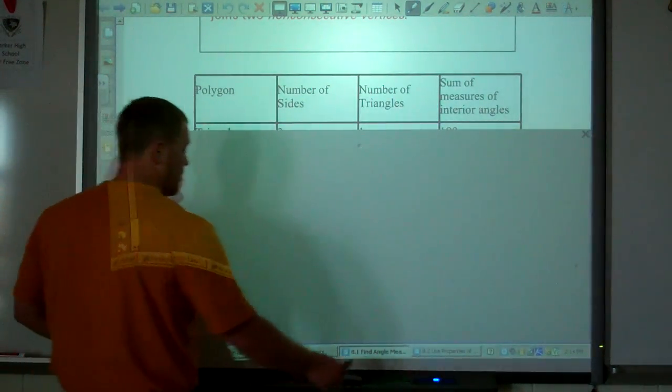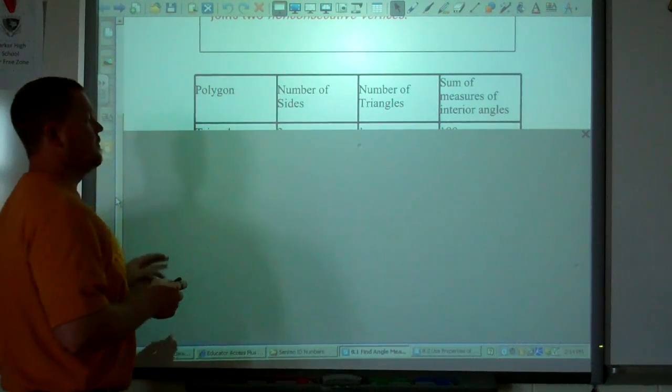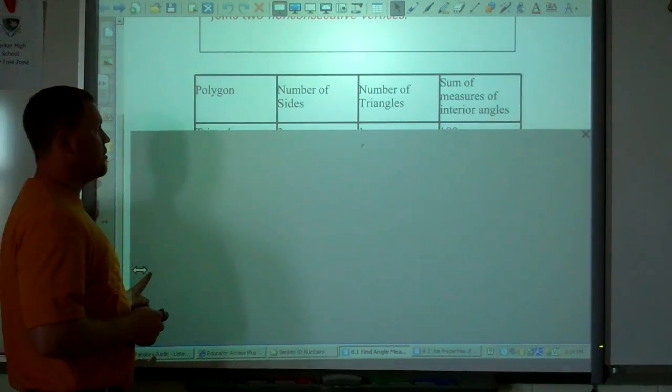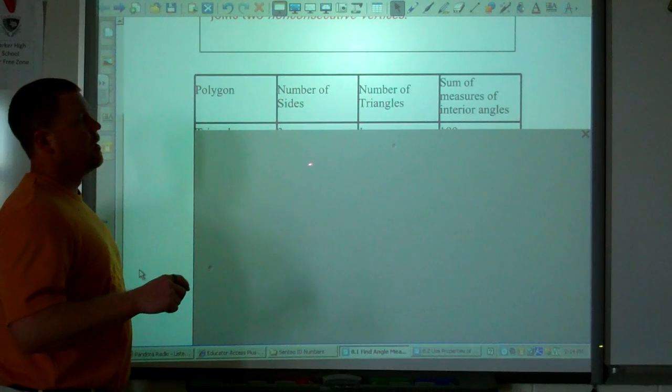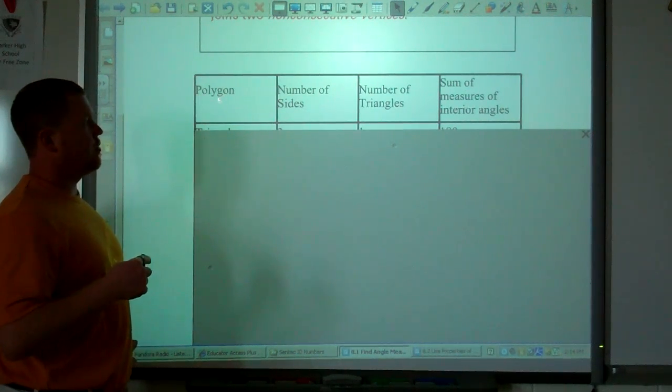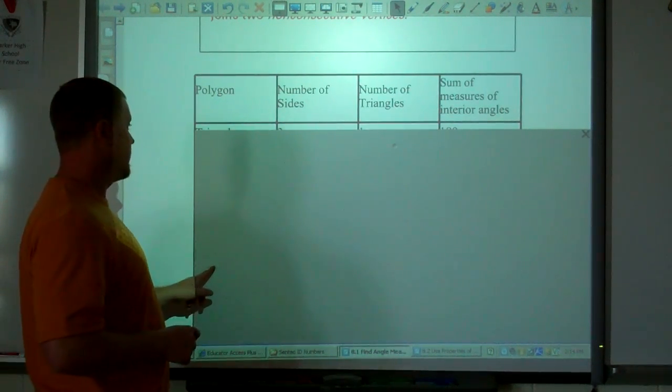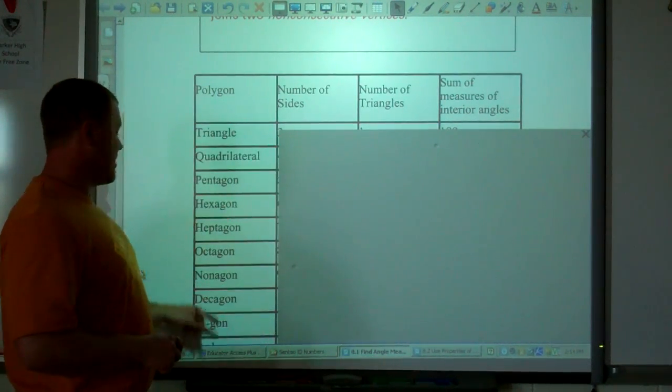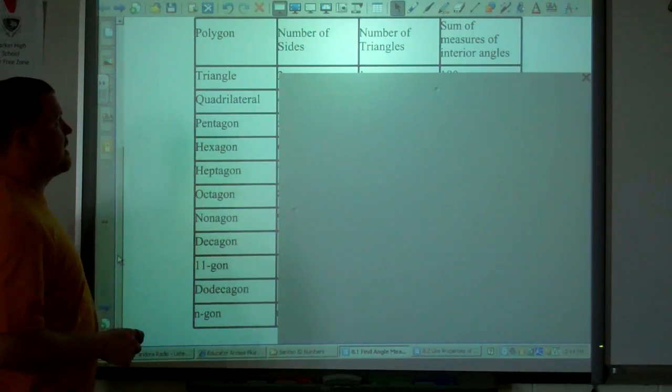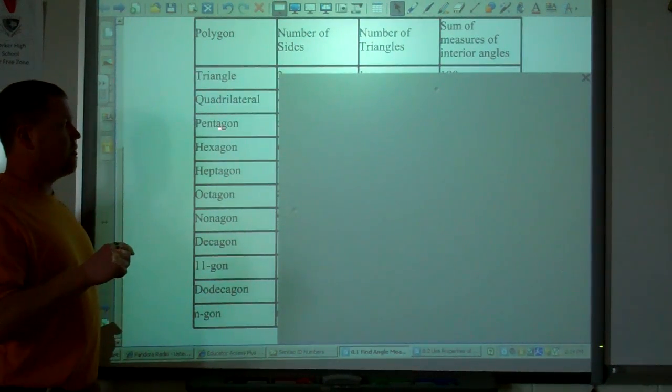So I have this table here. If I go too fast or you don't get everything written down, you can obviously pause it, rewind it, and watch it again. I have a table of polygon, number of sides, number of triangles, and the sum of the measures of the interior angles. These polygons, and you are expected to know these names: triangle, quadrilateral, pentagon,